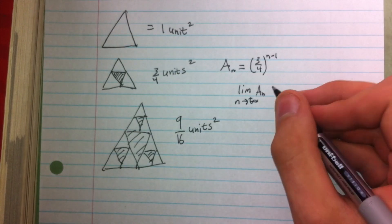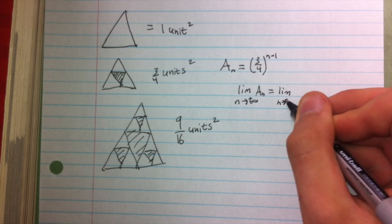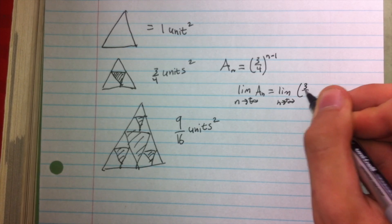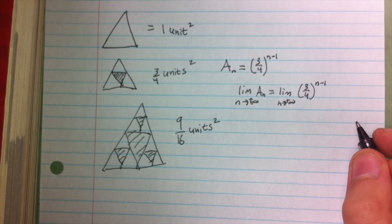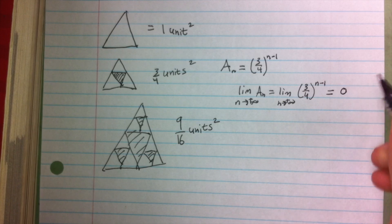And as it turns out, this is the limit as n approaches positive infinity of three-fourths to the n minus one, and since three-fourths is less than one, that's going to approach zero.